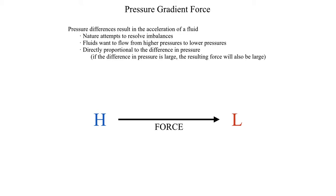The same also applies to pressure differences. If you have an area of high pressure and an area of low pressure — such as what's depicted in the diagram here, high pressure represented by the blue H and low pressure by the red L — then nature wants to resolve that difference by moving the higher pressure towards the lower pressure. This results in a force; you have to accelerate the air to resolve this imbalance, and in order to have that acceleration there has to be a force involved. And if there is a force involved, it'd be nice to know how to quantify it so that we can effectively model the atmosphere.